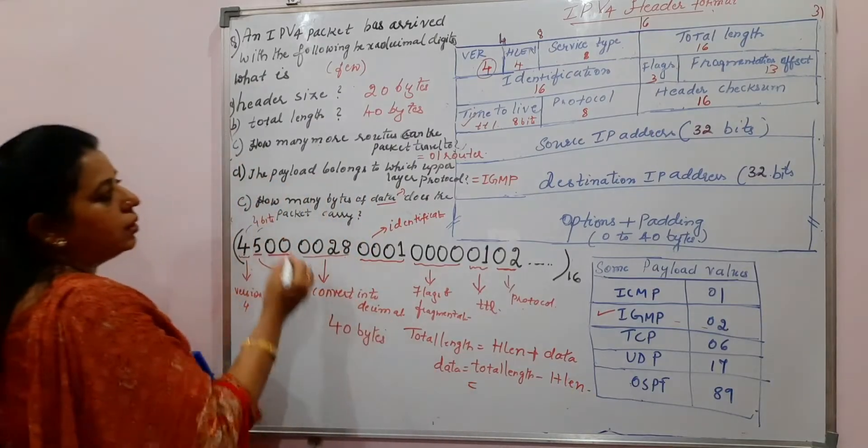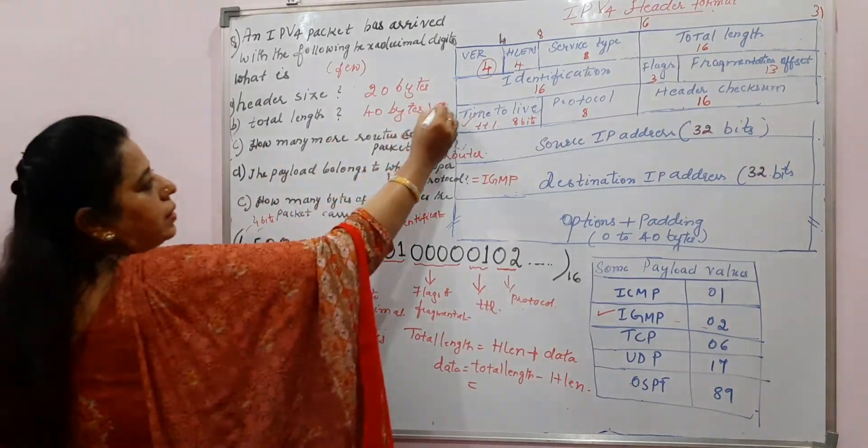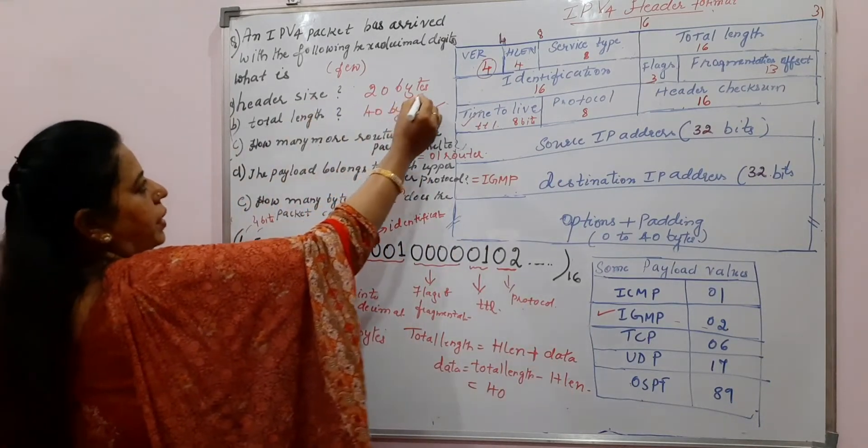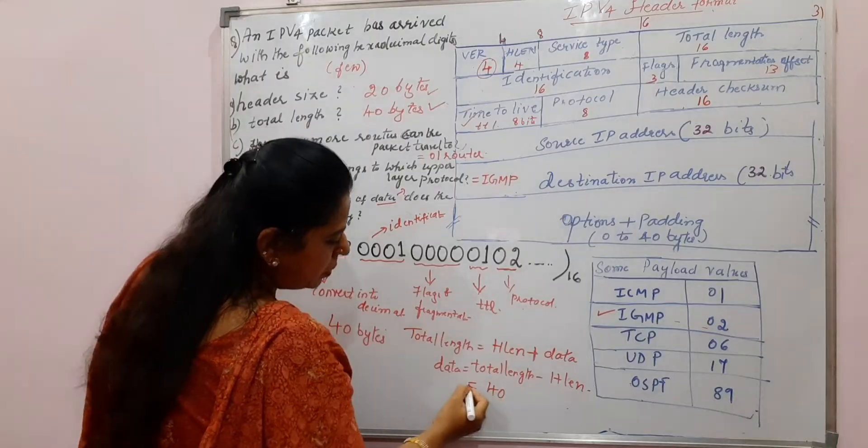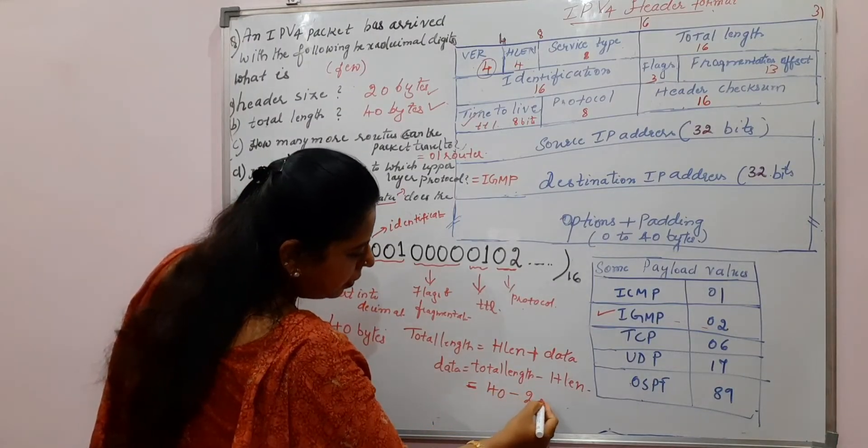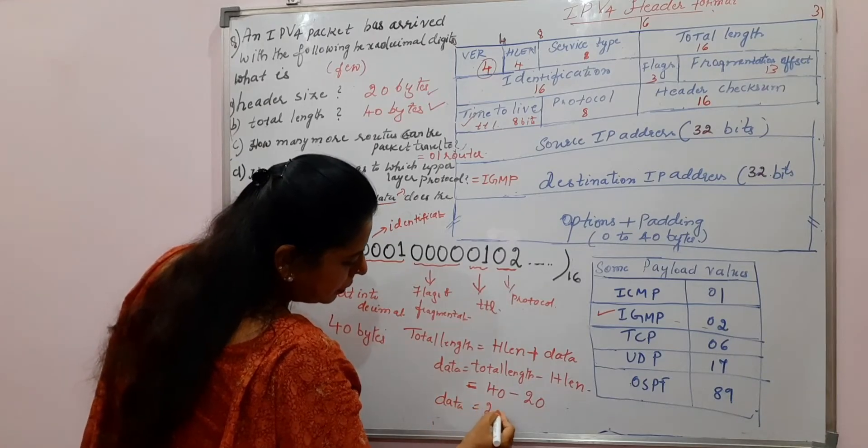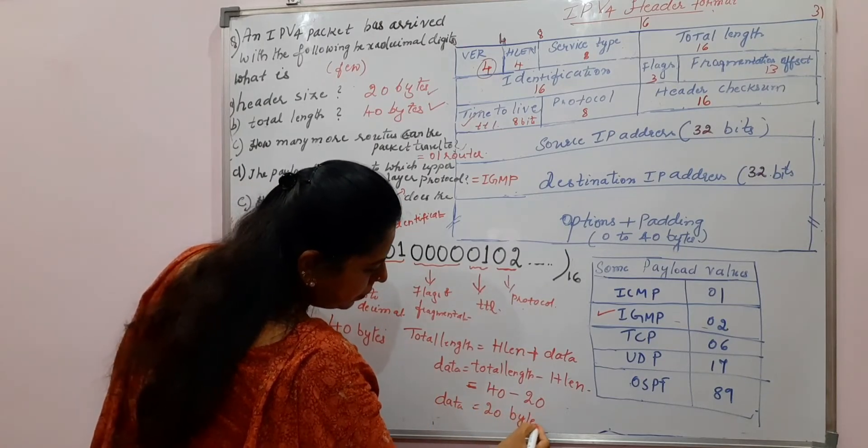Total length, how much? What is the value for the total length? It is 40 bytes. You can write here 40. What is the value for the header length? You have already determined in the previous part. It is 20. This header length 20, total length 40, data size is how much? 20 bytes. This is a very simple numerical, typical type of numerical that can be asked on this IPv4 header format.